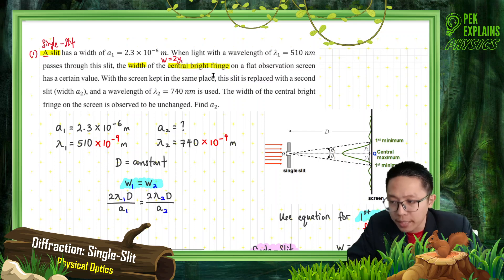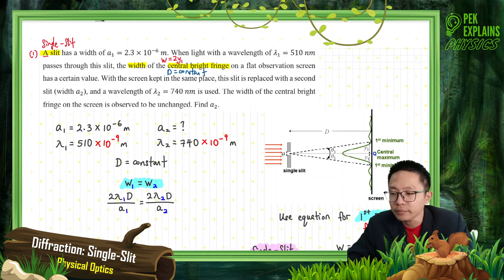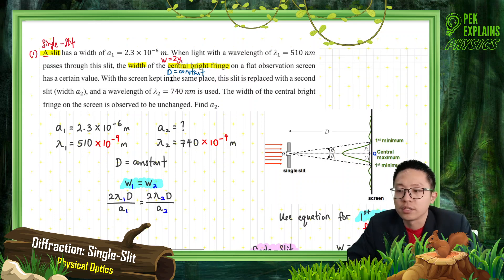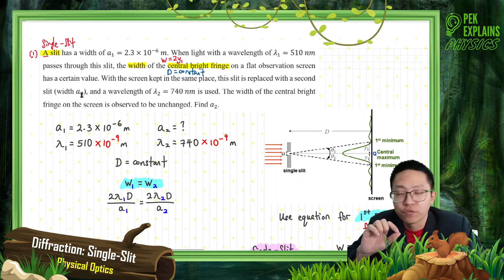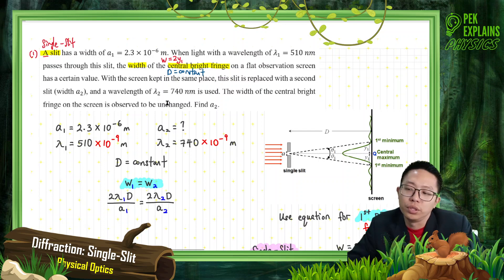With the screen kept in the same place — that means the screen distance never changes. The screen kept in the same place means the big D is constant. This slit is replaced with a second slit — a different slit of a different size, A2. And the wavelength also changed; a different light is used with another wavelength, lambda 2 equal to 740 nanometers.